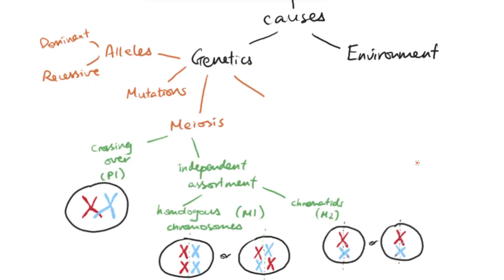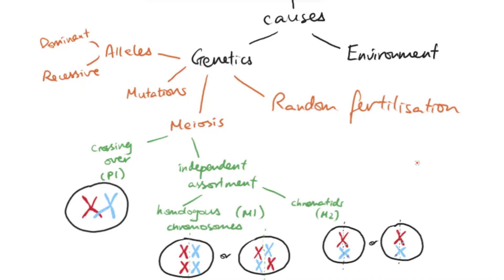Finally, one more thing that could also cause genetic variation is random fertilization. During sexual reproduction you are mixing the genes of two individuals, and any sperm cell can fertilize any egg cell. Out of the millions of sperm cells released, we don't know which one will carry its alleles to the egg cell, nor what alleles the egg cell might carry. It depends entirely on meiosis and which cells get released at what time. That on its own can create a variety of different genetic variation — which explains why siblings can have very different features, because the gametes that fused to make you may carry very different alleles compared to those that made your sibling.